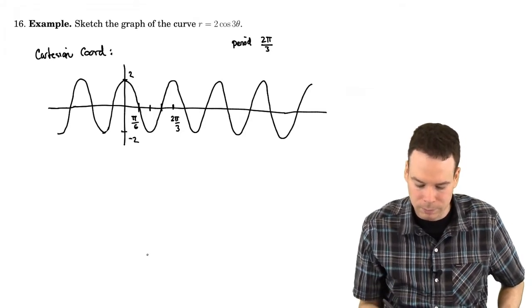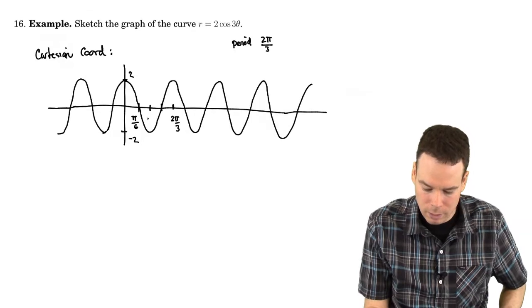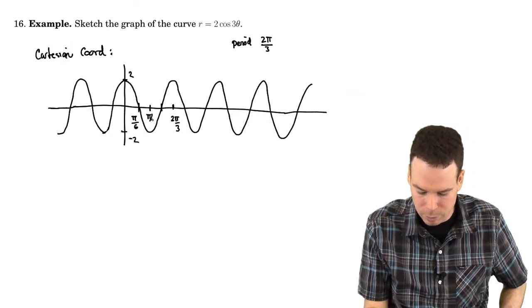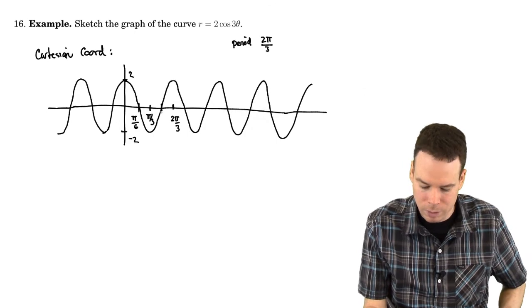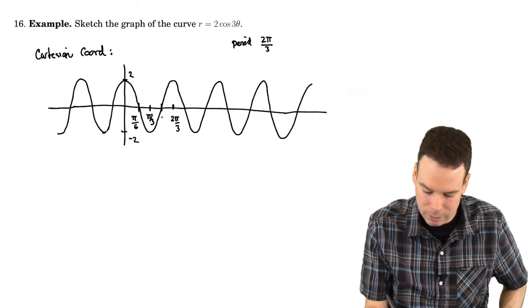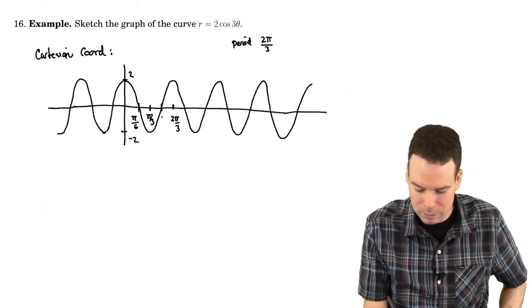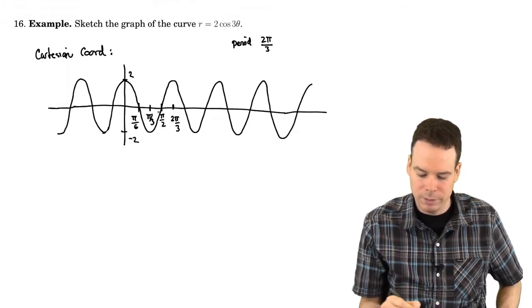π by 6 is where it crosses. Then another π by 6 later, which is now π by 3, is where it bottoms out. Another π by 6 later, which is 3π by 6, or π by 2, is where it crosses again.